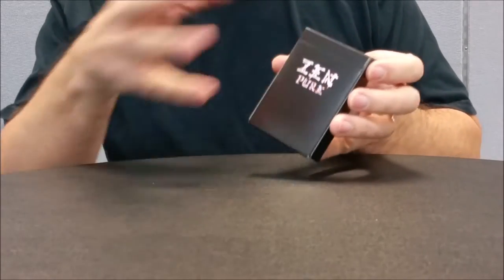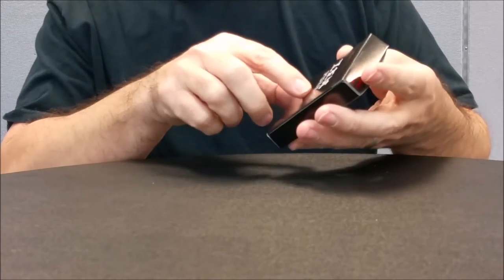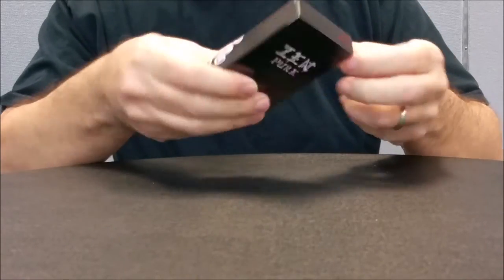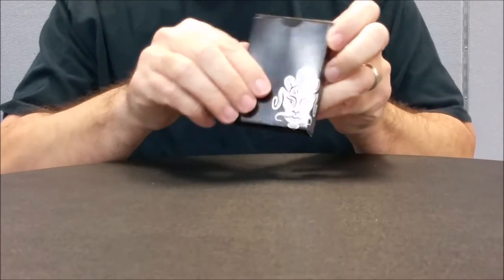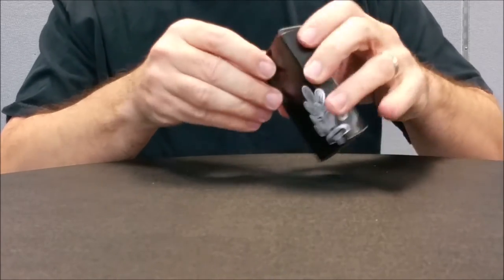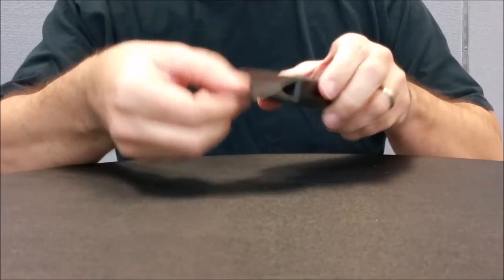It says Zen in an Asian font and then it says pure right there. The whole tuck is wrapped in this matte black color. You have the Zen warrior mask logo right there. The tongue on the tuck case features foil accents.